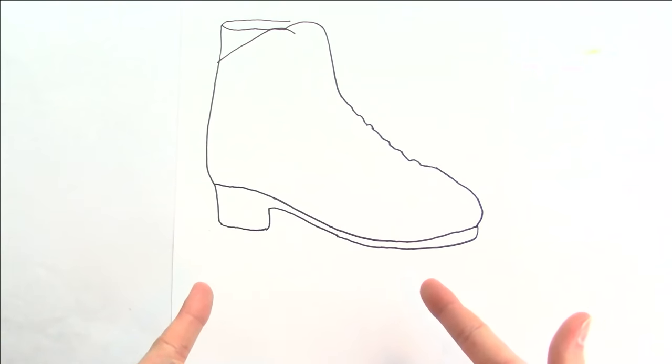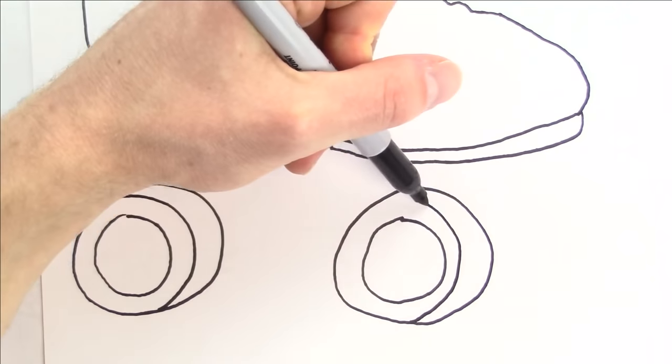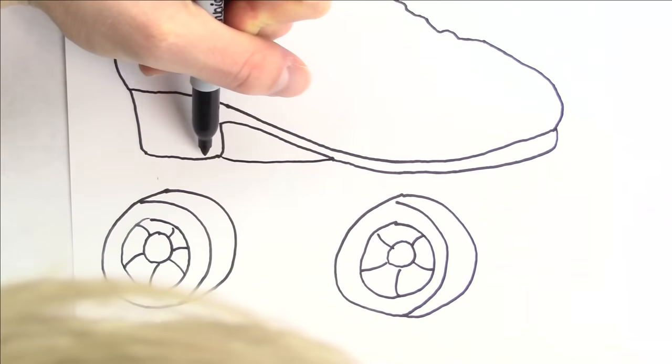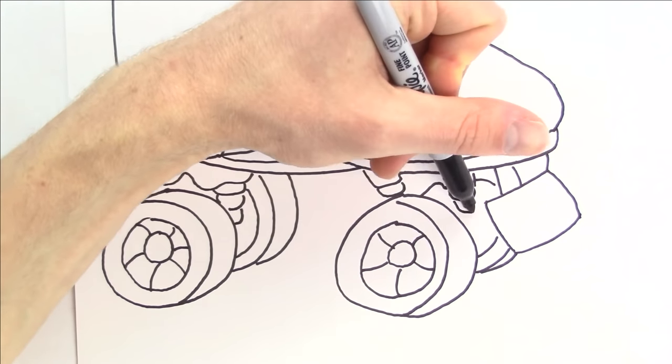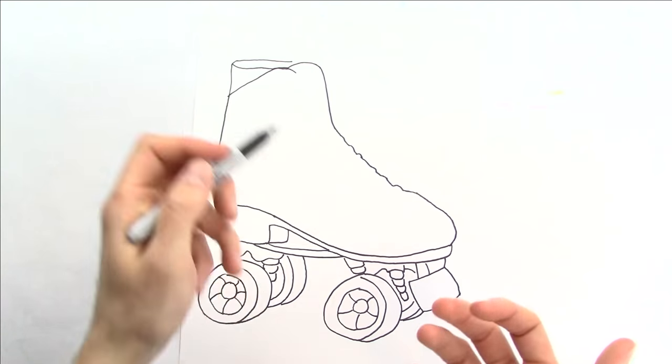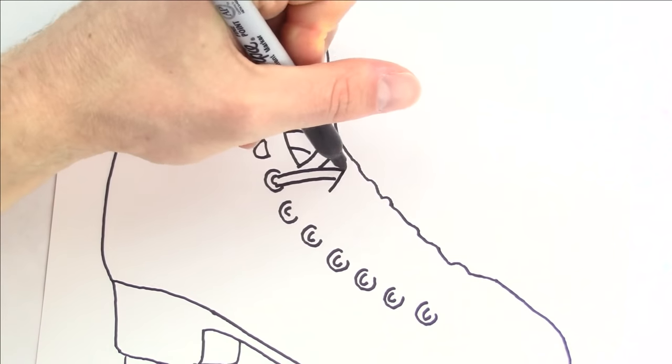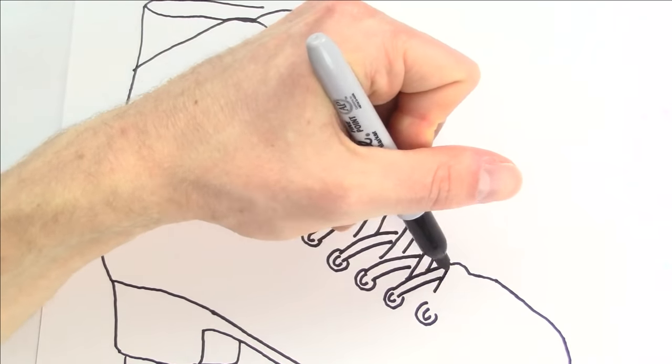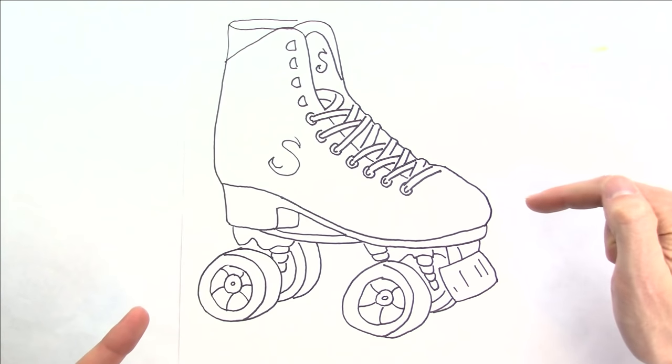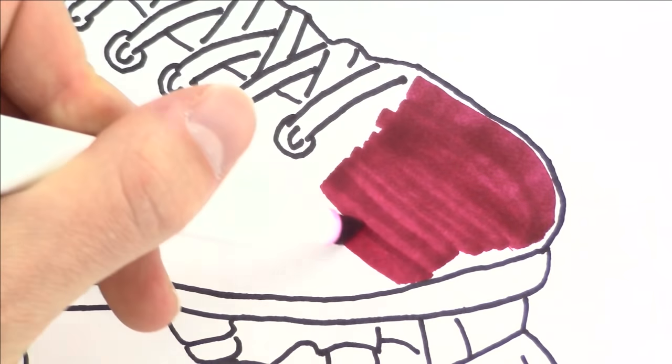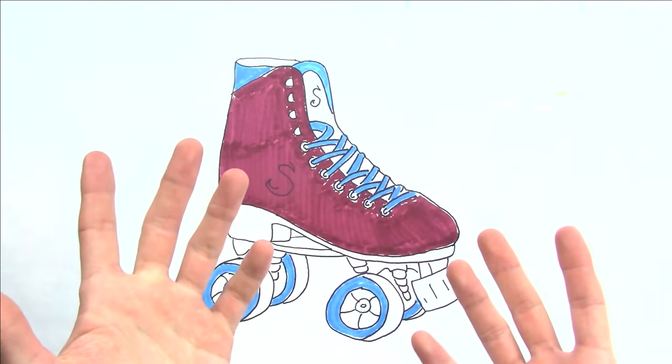And now we need the wheels. Now I need all the details like the laces. This is looking pretty good. Okay, so let's start with a maroon color for the shoe. I did some blue and now I just need some yellow.